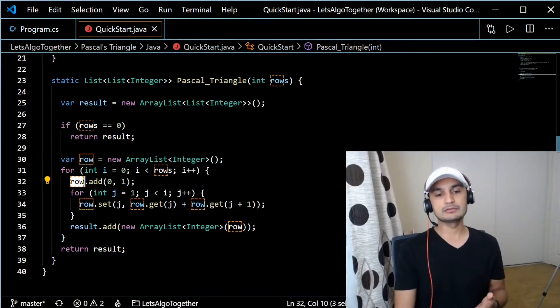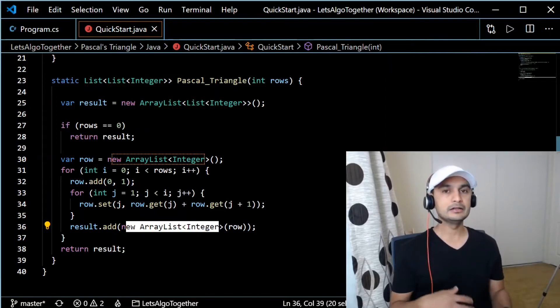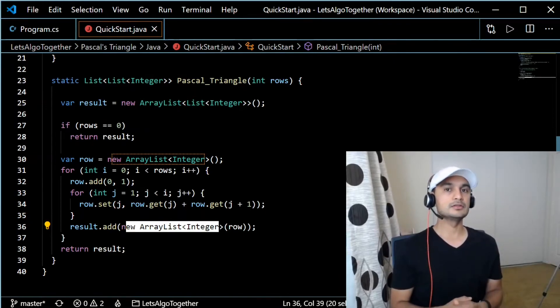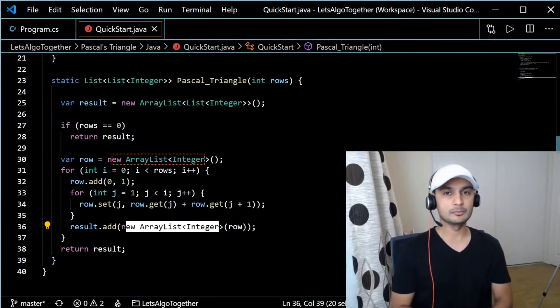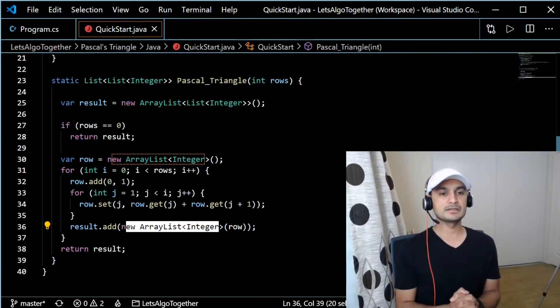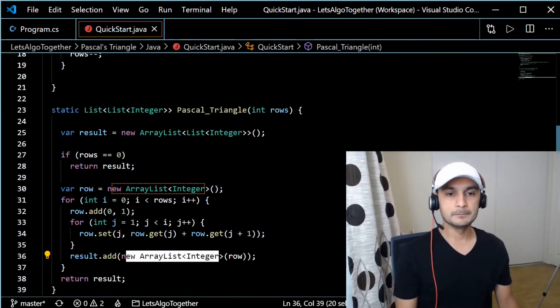So that's why we do new array list, so that's kind of like deep copy kind of thing if you are from C++ world. If you know pointers and everything then you know what is like deep copy and shallow copy and all that. So there you go guys, straightforward code.